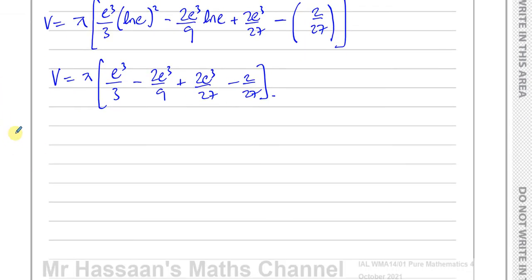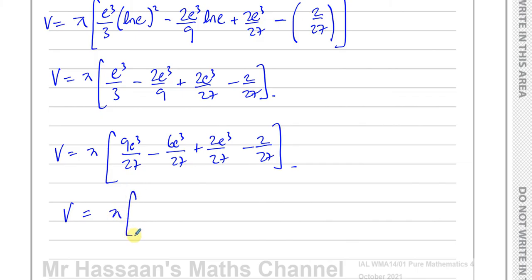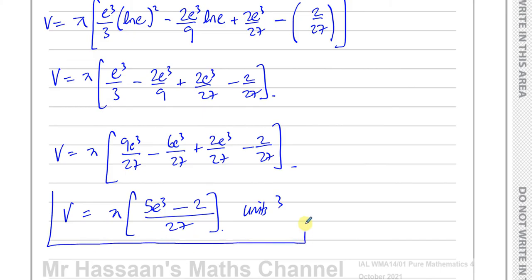Combining all these terms over a common denominator of 27: e cubed over 3 is 9e cubed over 27, 2e cubed over 9 is 6e cubed over 27, and we already have 2e cubed over 27. So V equals π times (9 minus 6 plus 2)e cubed minus 2, all over 27 — that's 5e cubed minus 2 over 27. So the volume of revolution is π(5e³ − 2)/27 cubic units.